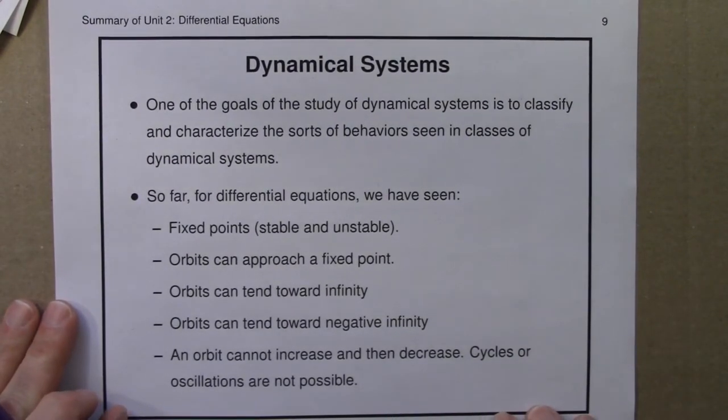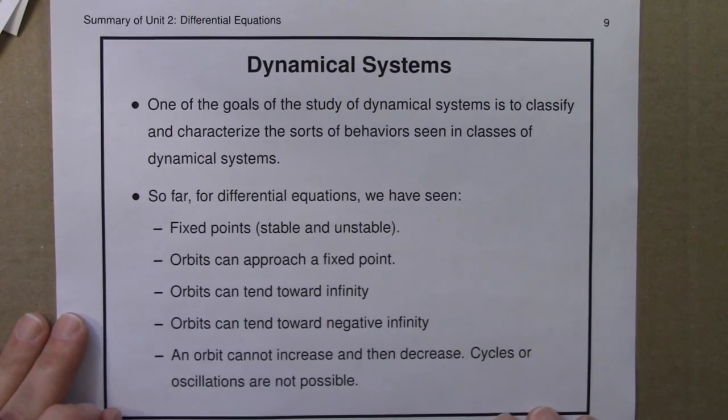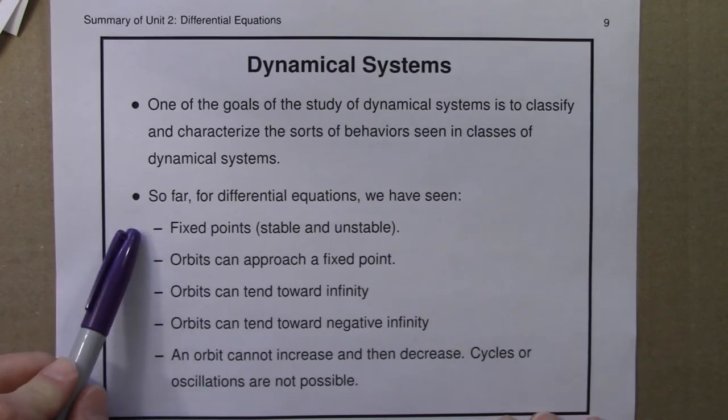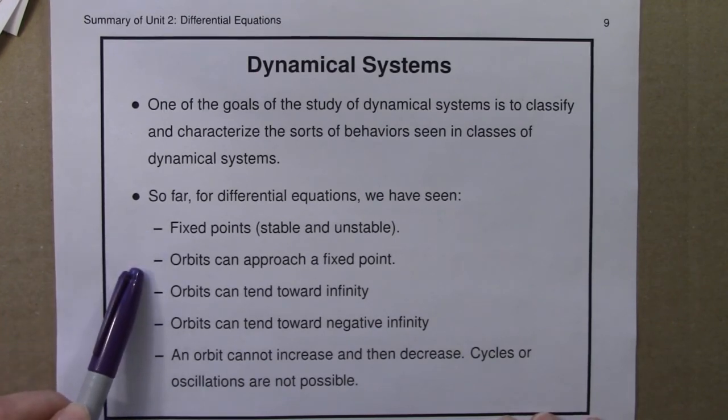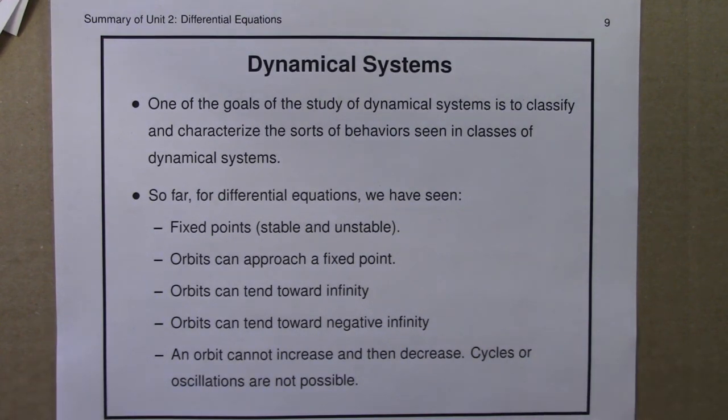So differential equations are a type of dynamical system. And in dynamical systems, one of the goals of study is to classify and characterize the sorts of behaviors that we see. So for differential equations, what have we seen? Well, we've seen fixed points, stable and unstable. Orbits can approach a fixed point. Orbits can tend towards infinity or tend towards negative infinity. They can move off the ends of the phase line. And that's pretty much it.